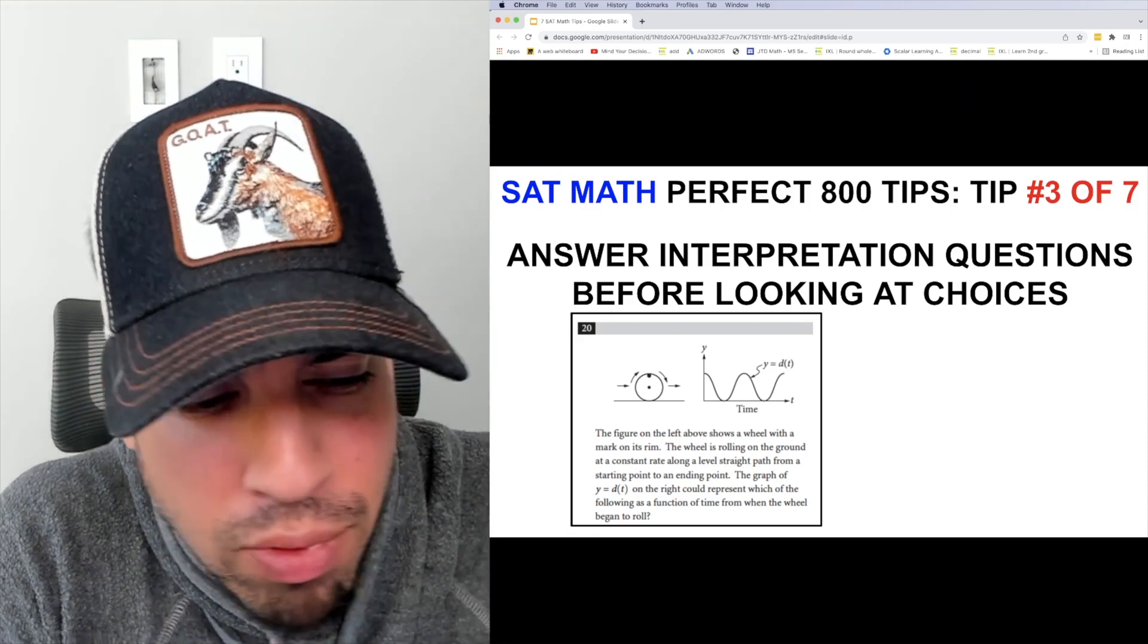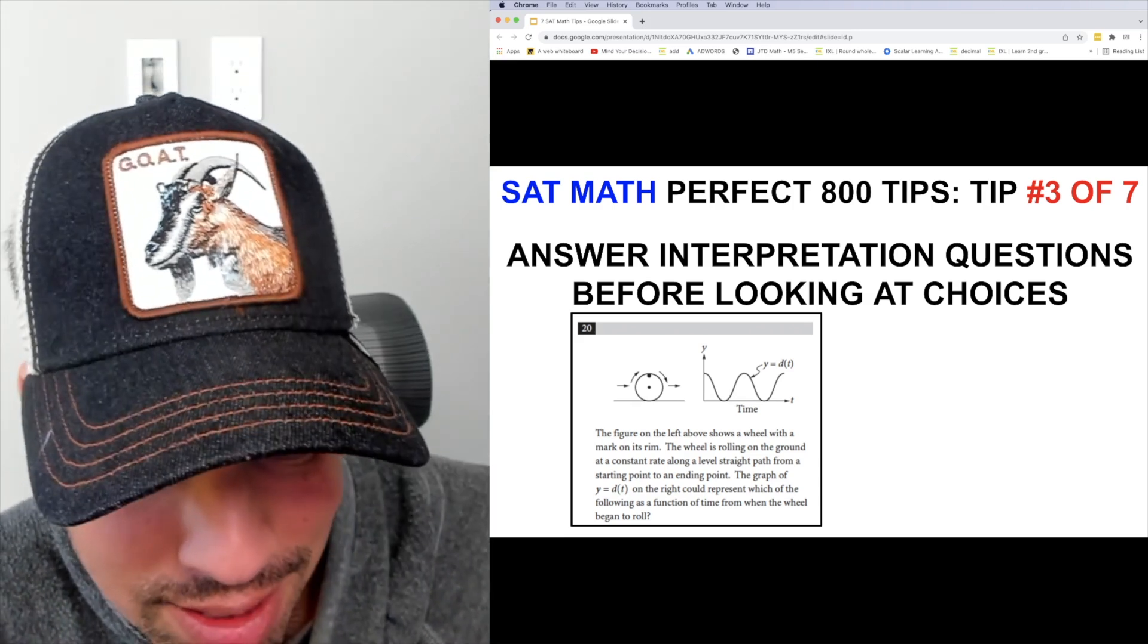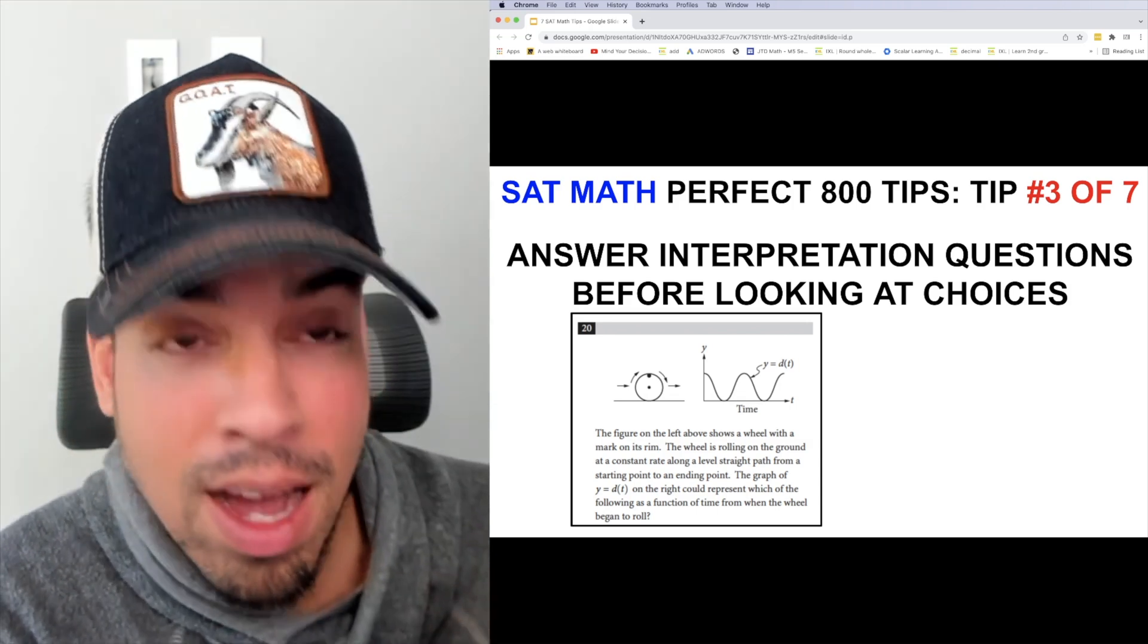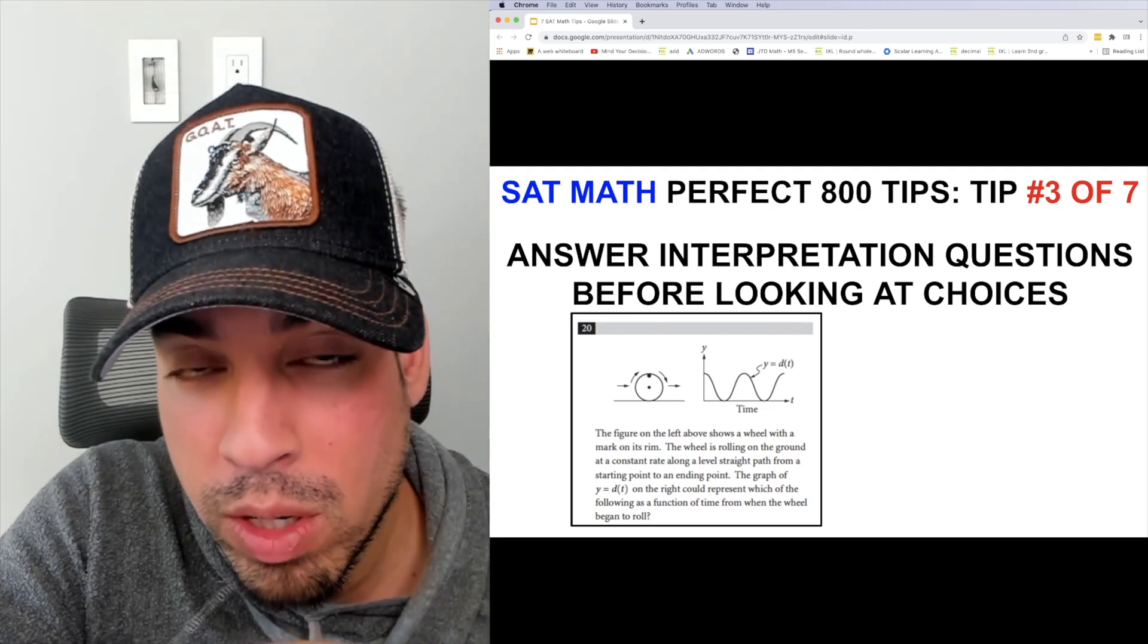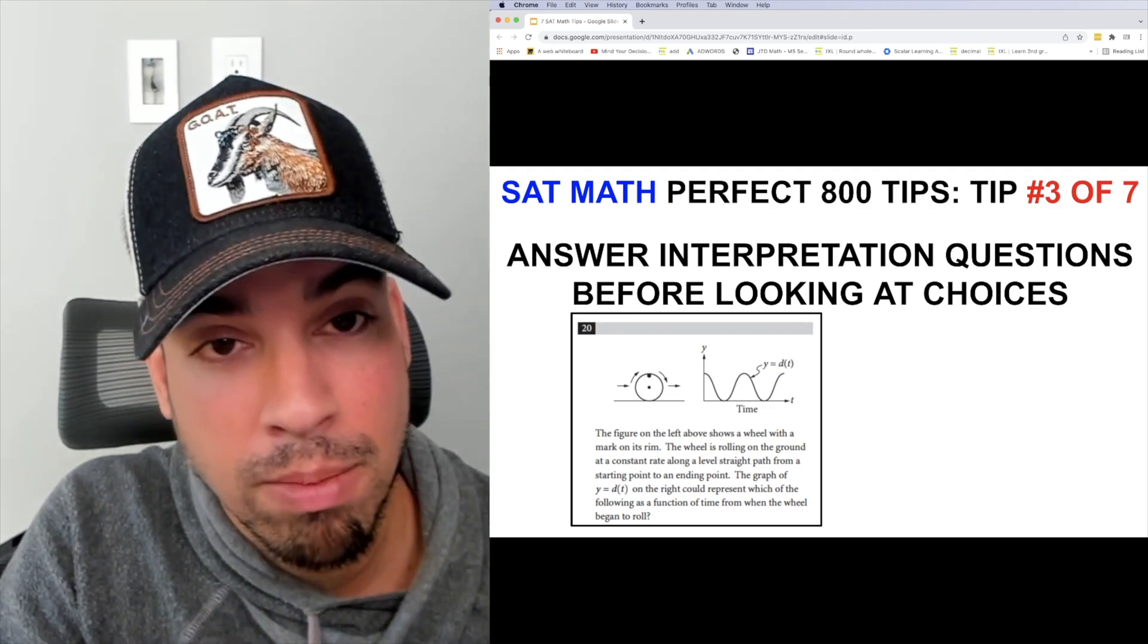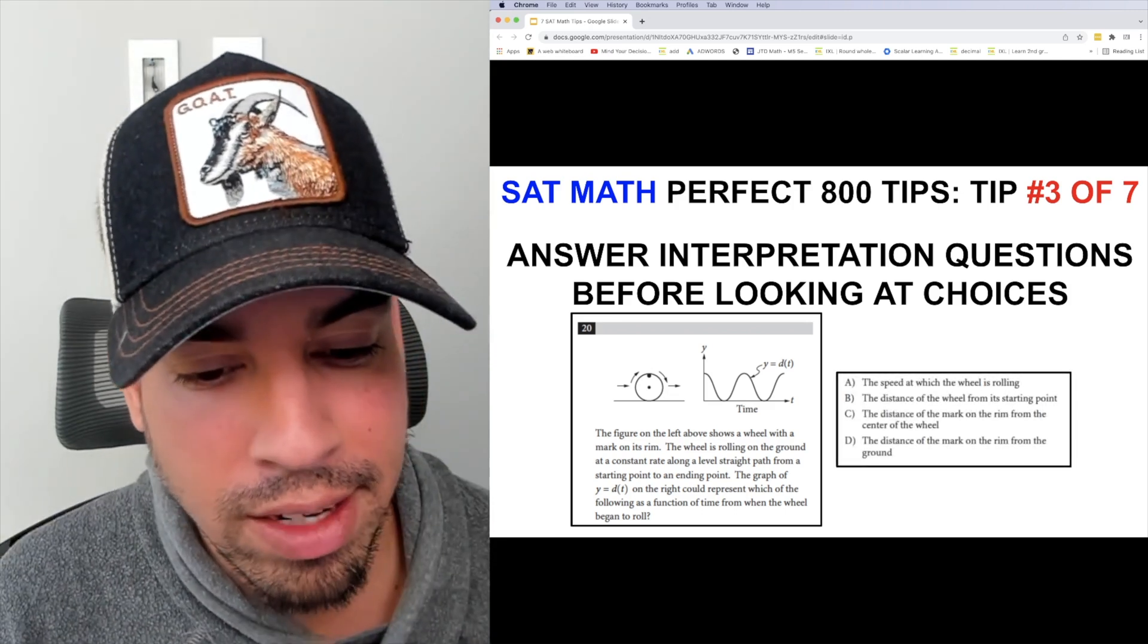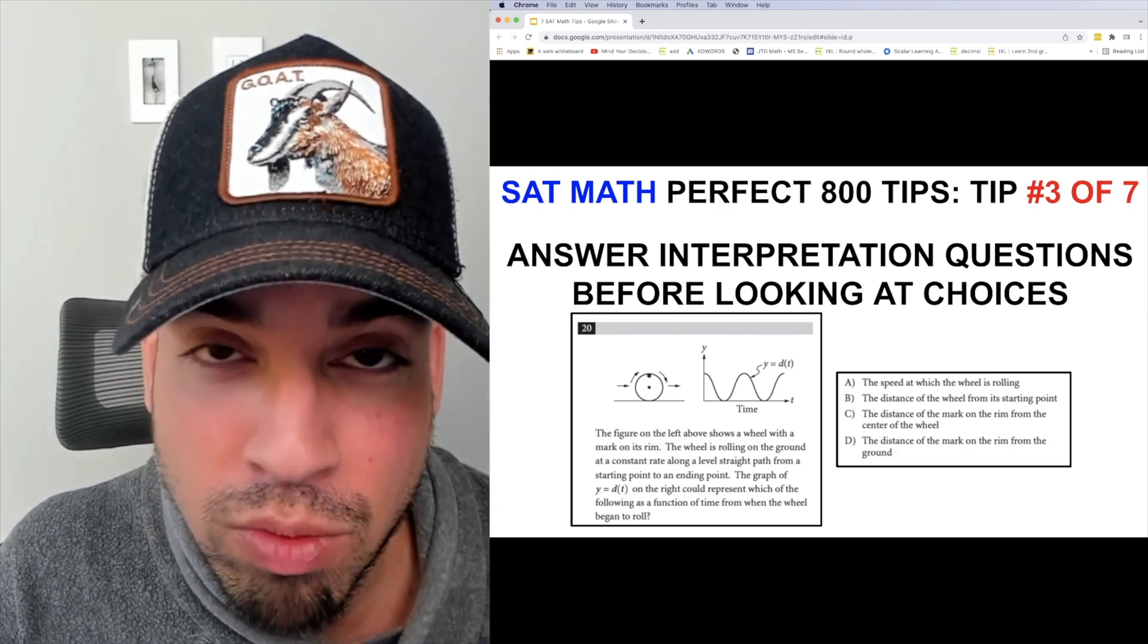Now when I look at this diagram, the one thing that I see is that little dot at the top of the wheel. And so when I think about it, well its height as the wheel rolls is going to go down, it's going to come back up, go down and come back up. And now I've understood that. Now we look at the answer choices and check it out, the distance of the mark on the rim from the ground—d is the winner. It's right there, boom, done.